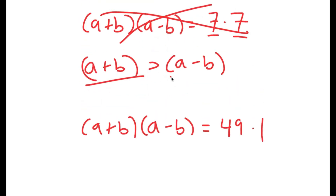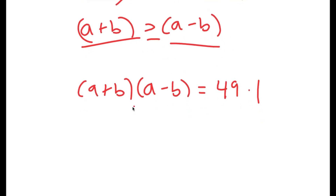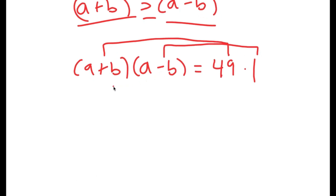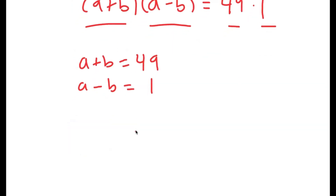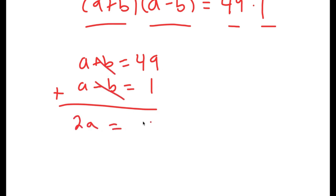Going back to a plus b times a minus b is equal to 49 times one. Because a plus b is greater than a minus b, we can say that a plus b is equal to 49 and a minus b is equal to one, since one is less than 49 and a minus b is less than a plus b. So we have a system of equations, and I'm going to add these equations: a plus a is 2a, b and negative b cancel out, and 49 plus one is 50.